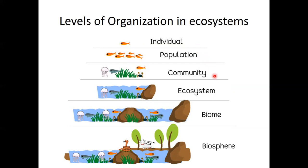A community is all of the populations that are in a given area. In this case, going from left to right, it's some kind of jellyfish, bluefish, waterweed, crab, and the original species we started with — goldfish. Notice how these are all living things. They might be plants or animals, but they're all going to be living, and there are no abiotic features at this level.